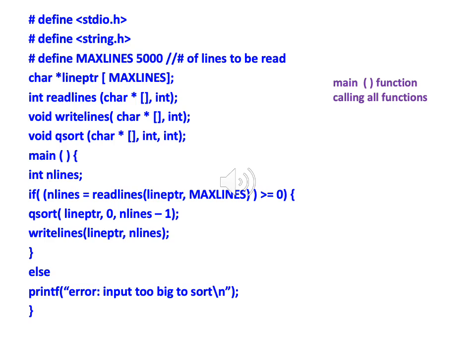Here is our main function — our driver, which is going to be calling all the other functions. We include stdio.h for input/output and string.h for string operations. MAXLINES is defined as 5000, which means we are putting a limit on the number of lines we can read — that limit is 5000.